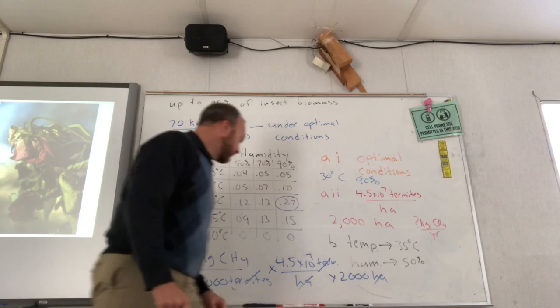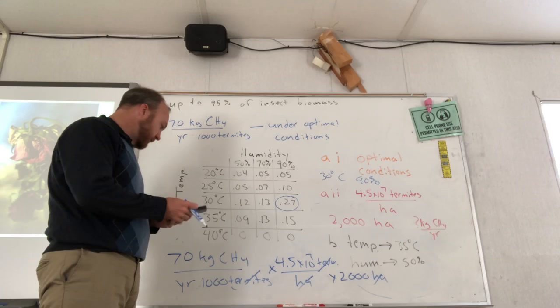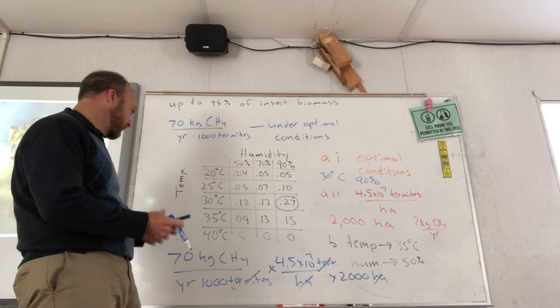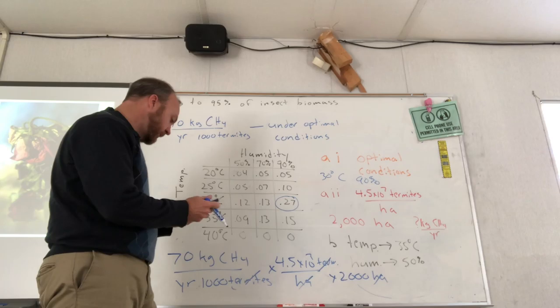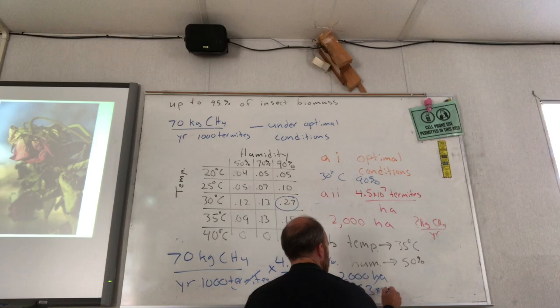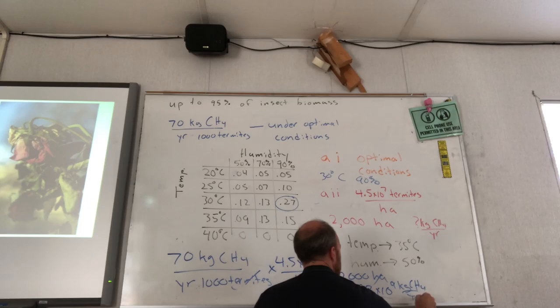Now the setup's done. Really, you can probably work this out without a calculator. But you get a calculator, so feel free to use it. I'm just going to say that that's 2 and that's 140. So 6.3 times 10 to the ninth. So I end up with 6.3 times 10 to the ninth kilograms of methane per year.